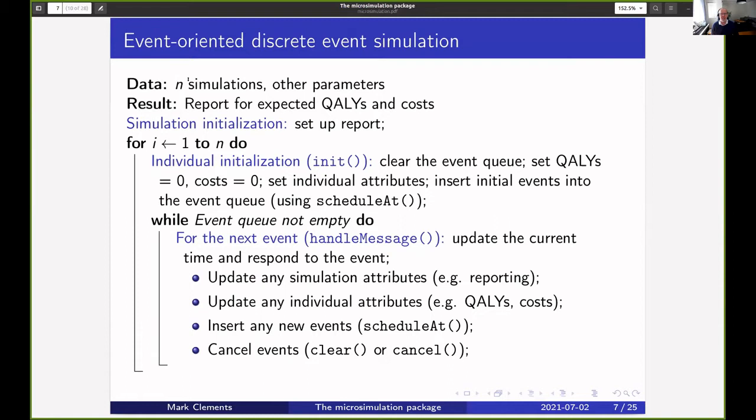What we do is we've got data coming in—the number of simulations and other parameters—and we want to report the expected QALYs and costs. We initialize the full simulation, which means we set up some reports, then we've got a large loop for the number of individuals. For each individual, we set up an initialization using the init method. That clears the event queue, sets the attributes to their default values, sets some individual attributes, and then sets the initial events into the event queue using the scheduleAt method.